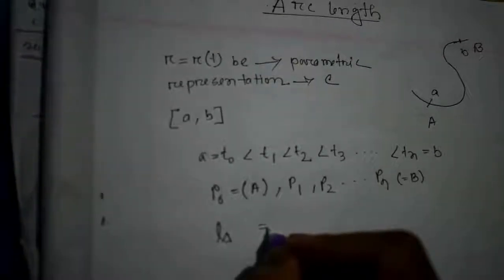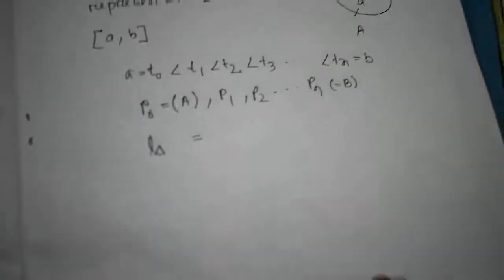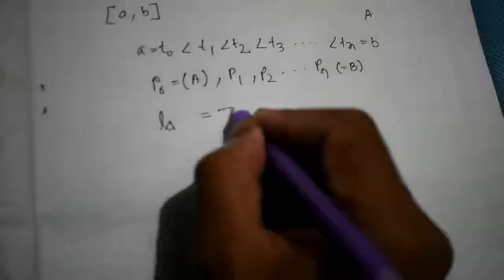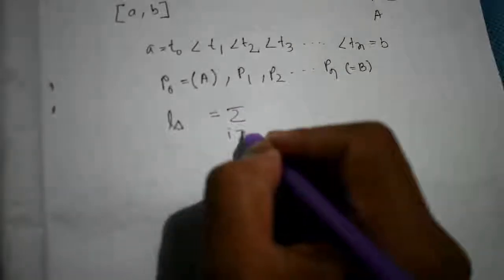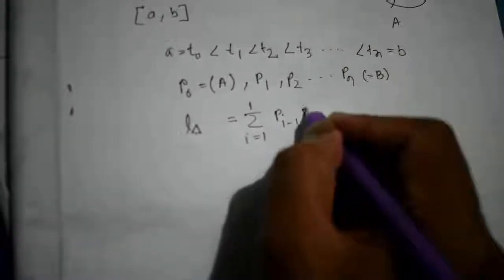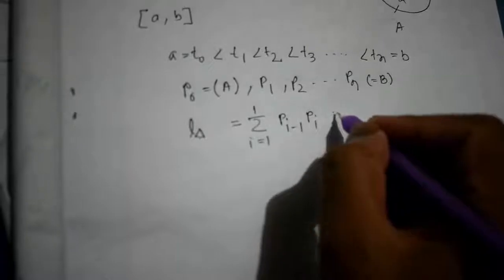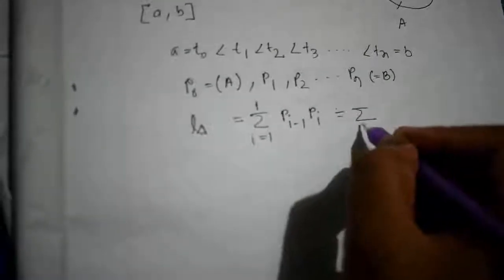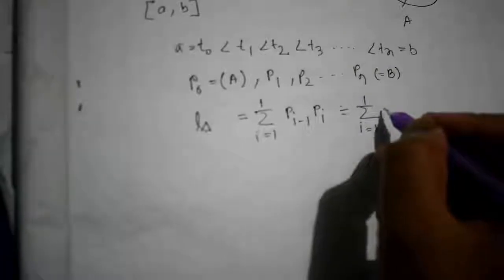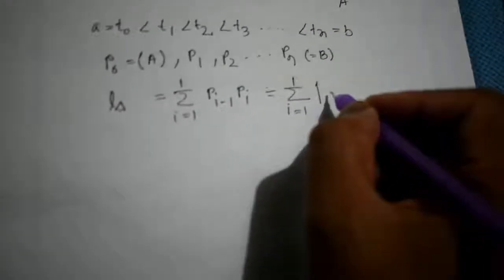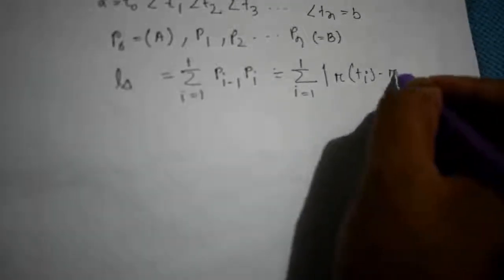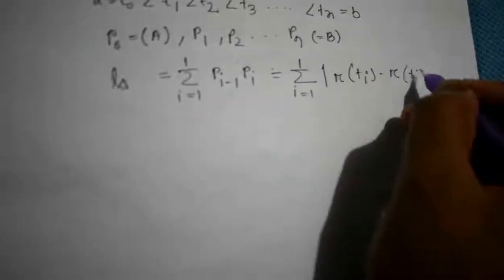The length will be L_delta equal to summation from i equal to 1 to n of |pᵢ₋₁ pᵢ|. Since we have the parametric representation, that will be summation of |r(tᵢ) - r(tᵢ₋₁)|.